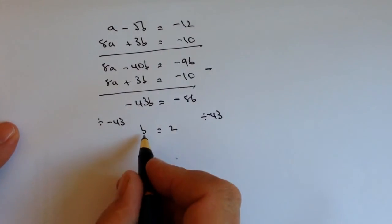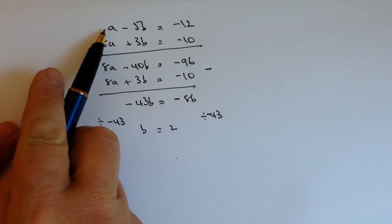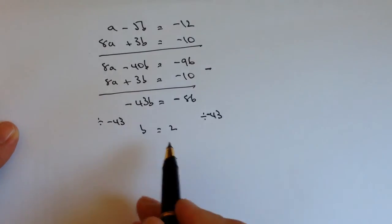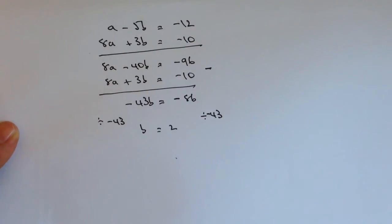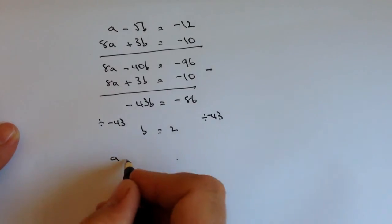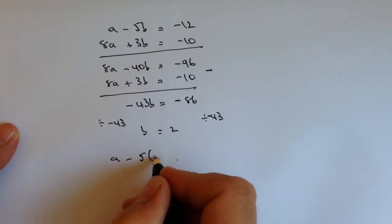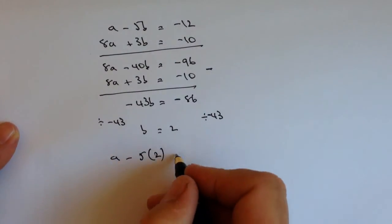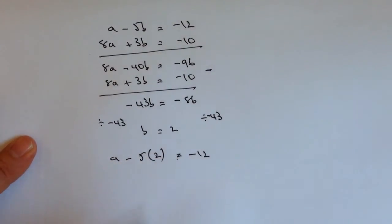But it doesn't really matter which one you choose. Okay, so if I look at the first equation, which is this one here, I could choose this or this or this. It doesn't really matter, they're all the same. So I'm going to choose b = 2 and I'm going to substitute it into that top equation. So I've got a - 5, and the easiest way is to write 2 in brackets because that's actually substituting the b. And that equals -12.